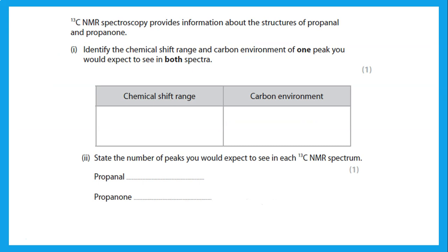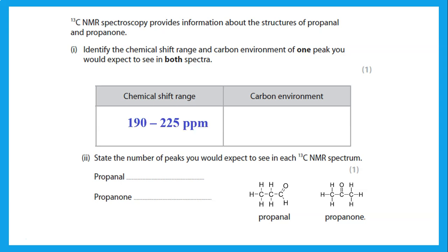Carbon-13 spectroscopy provides structural information about propanal and propanone. A peak seen in both would be the C=O peak (around the relevant chemical shift from the data booklet). Propanal gives three peaks in carbon-13 NMR because all three carbons are different. Propanone gives two peaks: one for the C=O and one for both equivalent methyl groups.